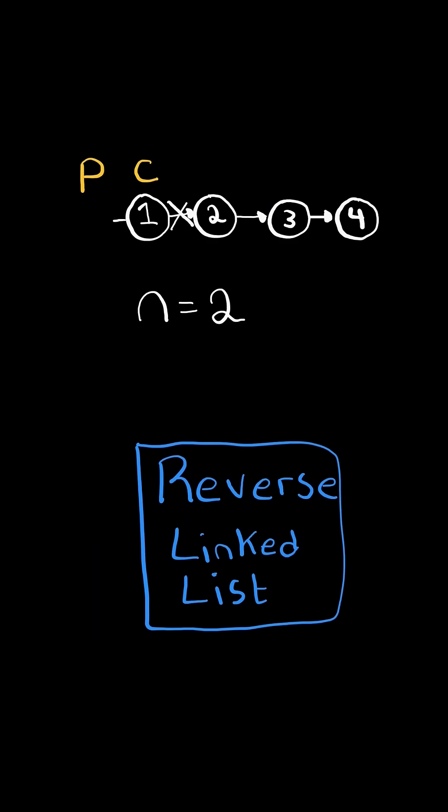And we begin reversing by setting the current.next to previous, and then both advancing previous and current. Again, we set current.next to previous, and advance both previous and current.